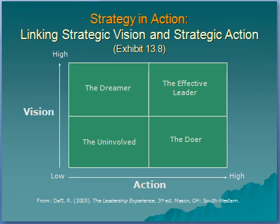Let's talk about the leader's contribution towards stimulating vision and action planning. This illustration is from Daft's book, based on the work of William Hitt. There are four types of leader: the dreamer, the effective leader, the doer, and the uninvolved. Notice the axes — the vertical axis is vision, from low to high, and the horizontal axis is action, from low to high.